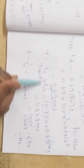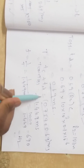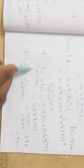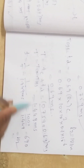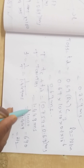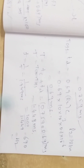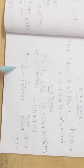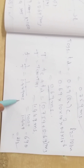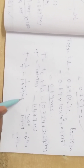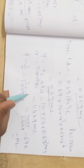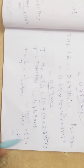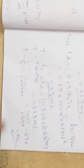T equals Tc plus Td, that is T_on plus T_off, which equals 1.449 milliseconds. F equals 1 by T, which is 1 by 1.449 milliseconds. Converting, that is 1000 by 1.449, which equals 690 Hz.